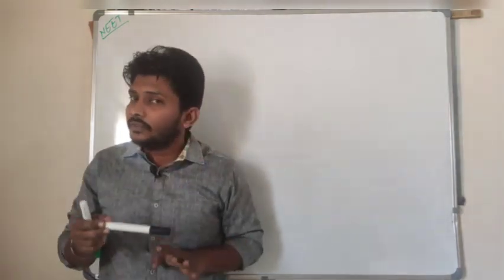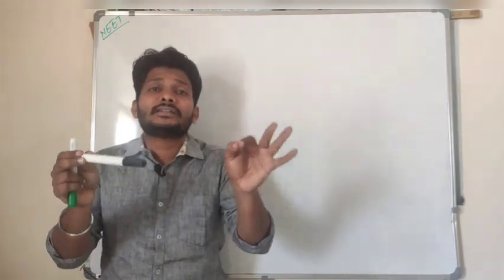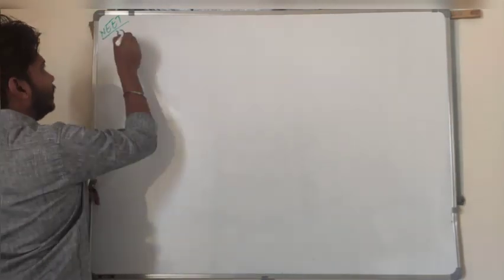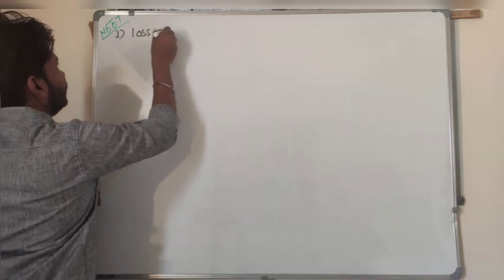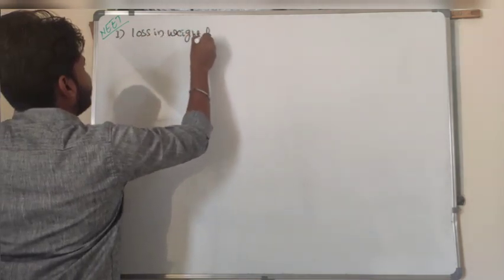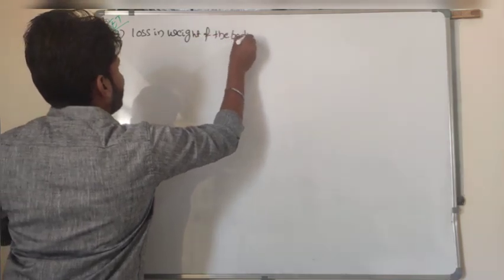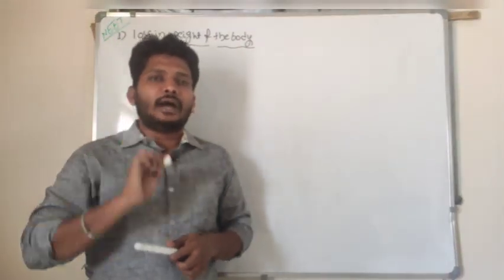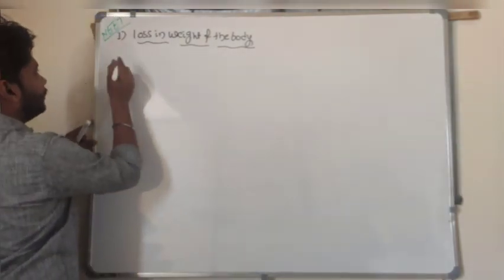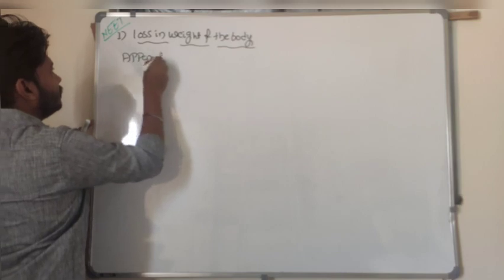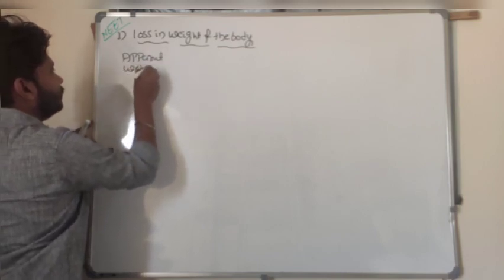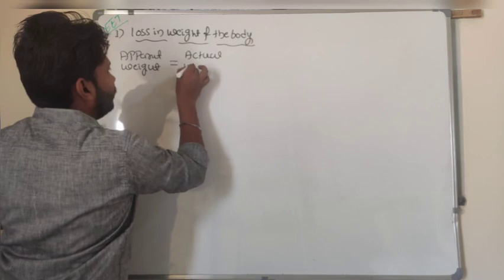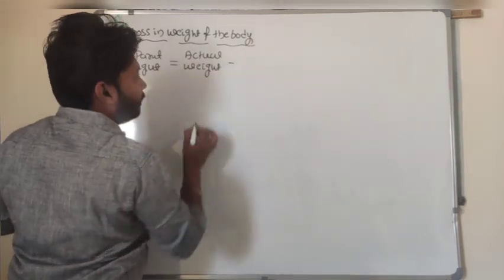There is a loss in weight of the body. How much weight is lost? We need to find the apparent weight. The apparent weight is equal to actual weight minus buoyant force.